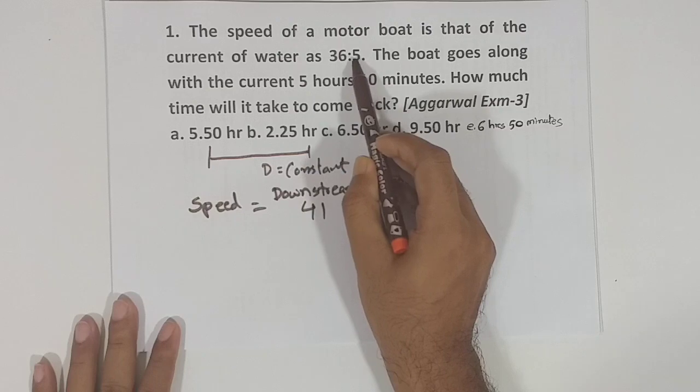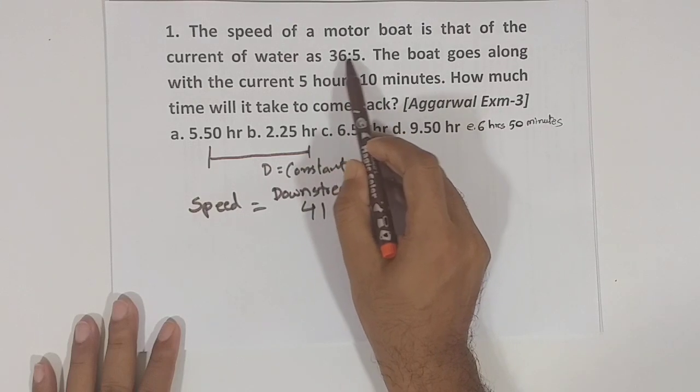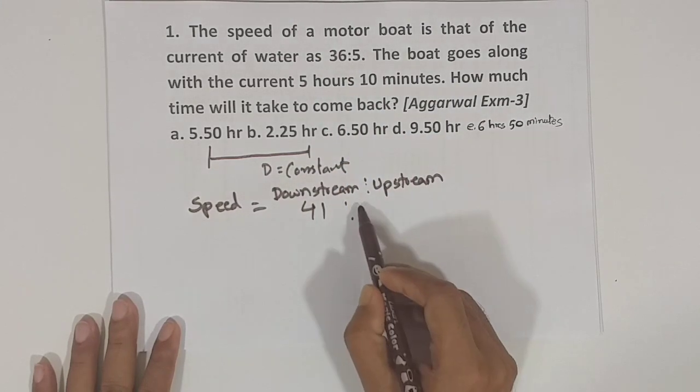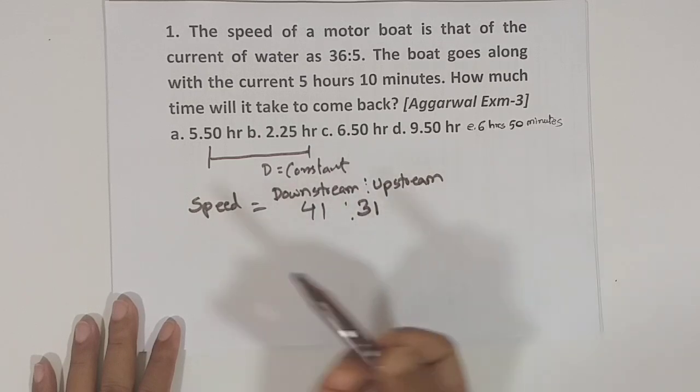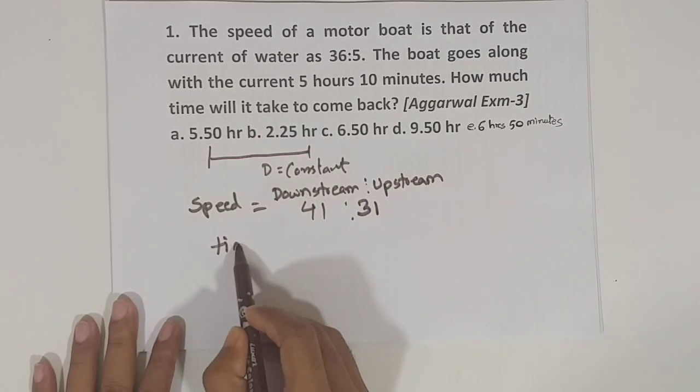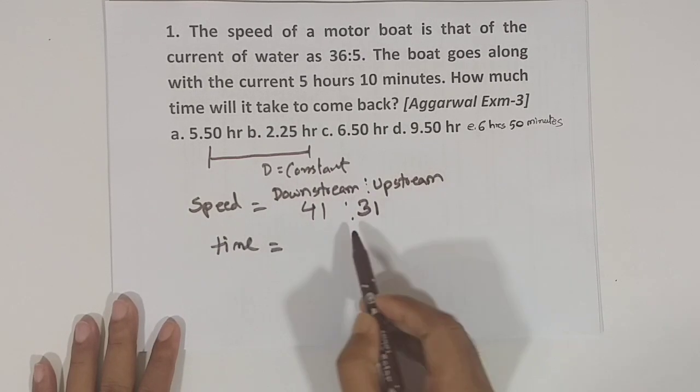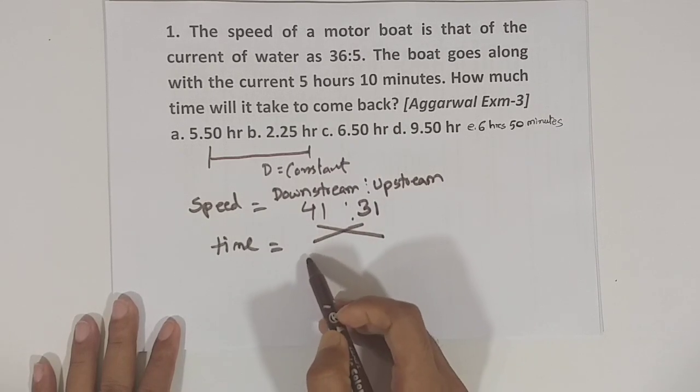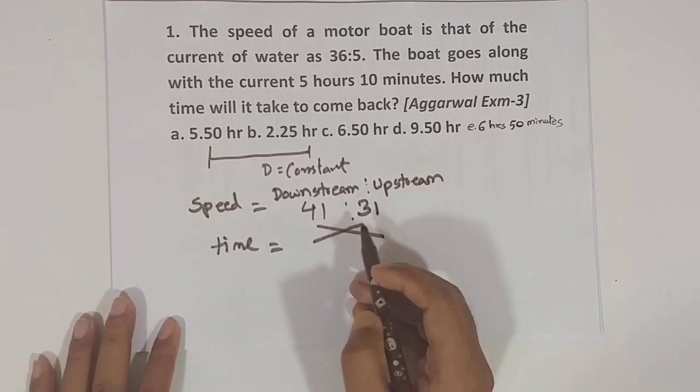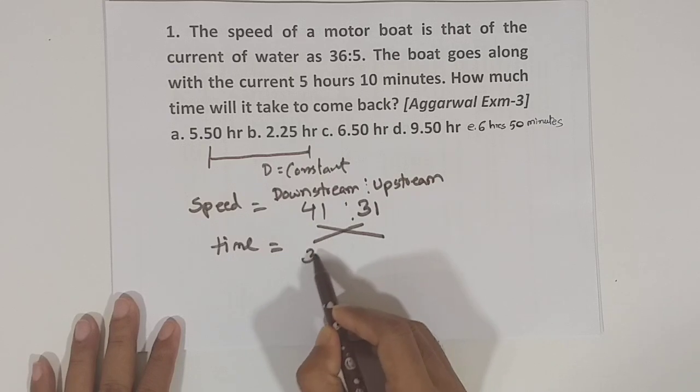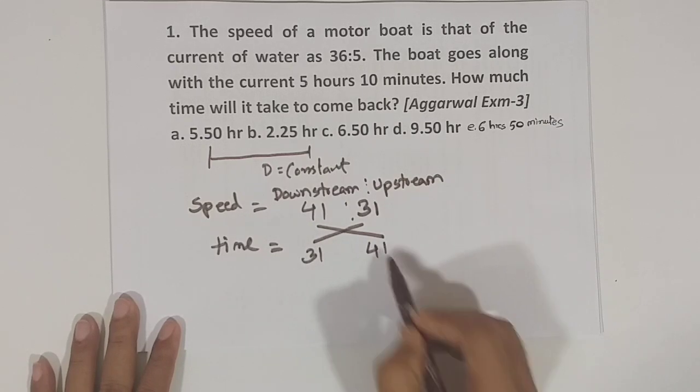If I give 36, I will give you 35 minus. So, I will give you 31. I will say that the speed and time ratio is inverse. This is inverse. So, 31 is equal to 41. This is the same way.